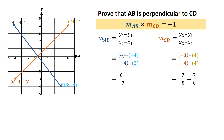You should already see that these fractions are opposite inverses of each other. The one is negative, the one is positive; the one is 8 over 7, the other one is 7 over 8. That pretty much always happens if you're working with perpendicular lines — you get two fractions that are the opposite inverses of each other.